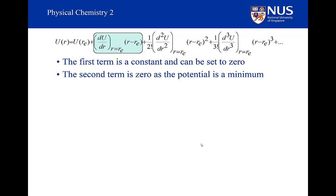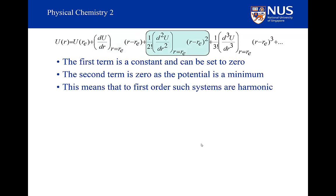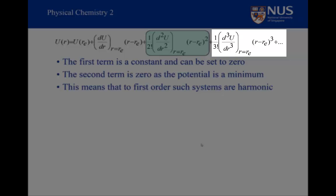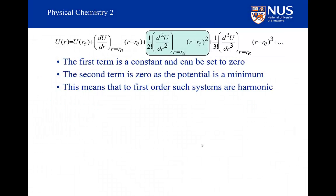So the first term we set to zero and the second term is equal to zero. The next term, however, is certainly non-zero, as the potential energy definitely has curvature at the bottom of the well, and the displacement squared is not zero. The final term depends on the third order differential, which is non-zero but quite small, and it depends on the displacement cubed. If the displacement is small, the displacement cubed will be a lot smaller than the displacement squared. Similarly, displacement to the power 4 will be smaller than displacement cubed, and so these higher order terms become smaller and smaller as long as the displacement itself is small.